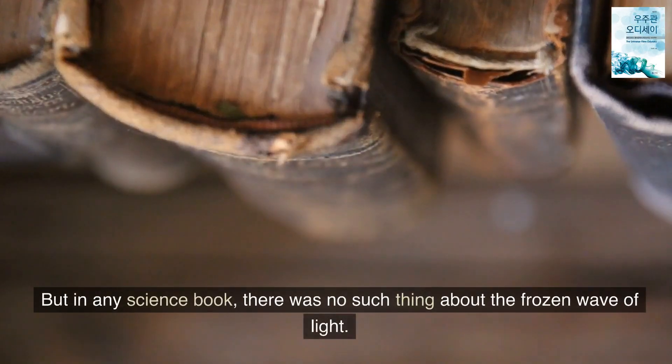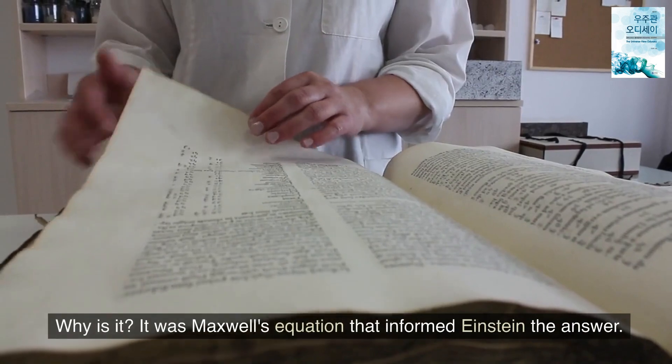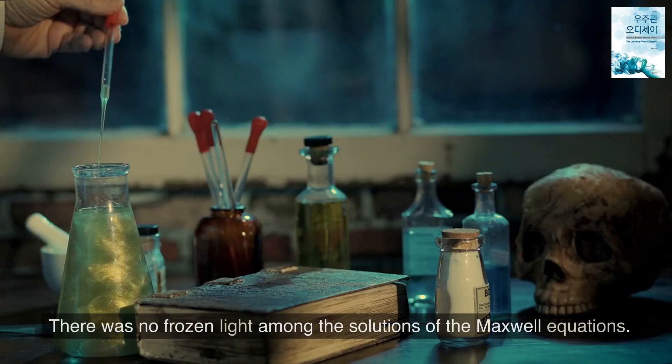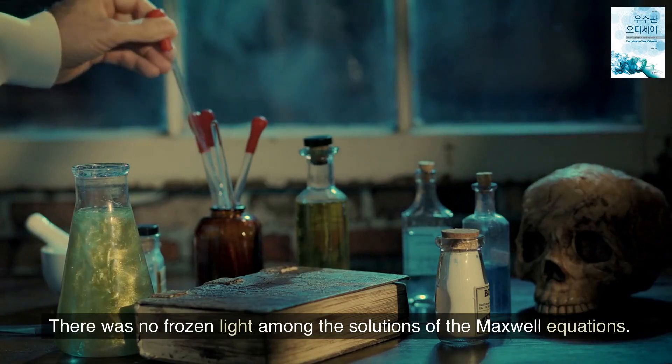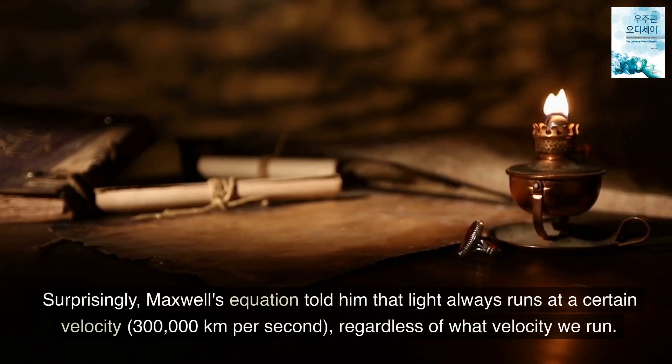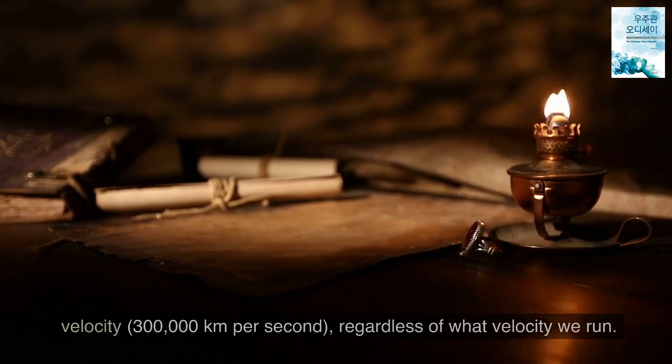But in any science book there was no such thing about the frozen wave of light. Why is it? It was Maxwell's equation that informed Einstein the answer. There was no frozen light among the solutions of the Maxwell equations. Surprisingly, Maxwell's equation told him that light always runs at a certain velocity, 300,000 kilometers per second, regardless of what velocity we run.